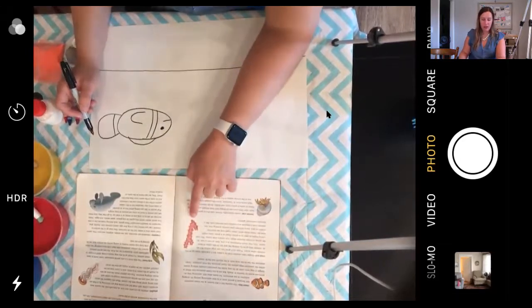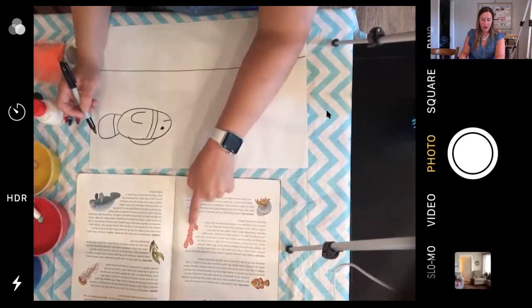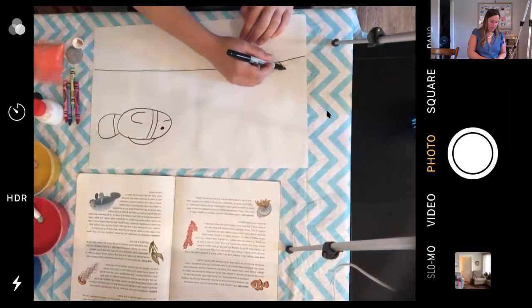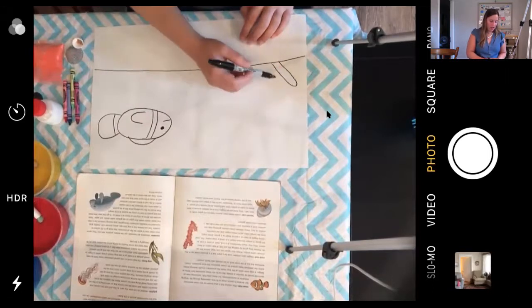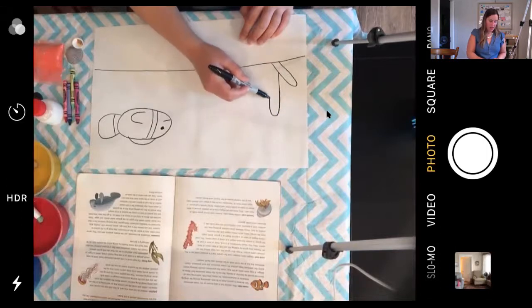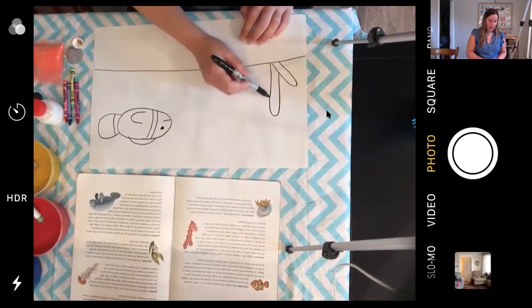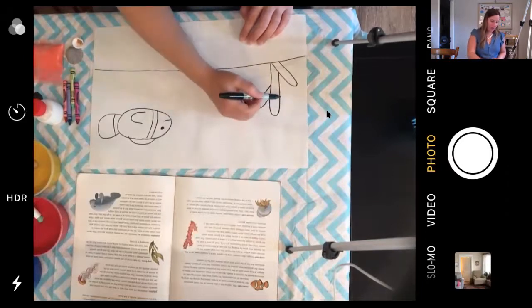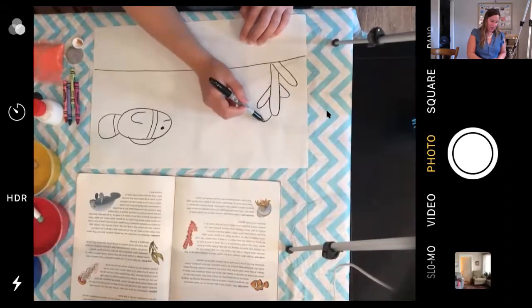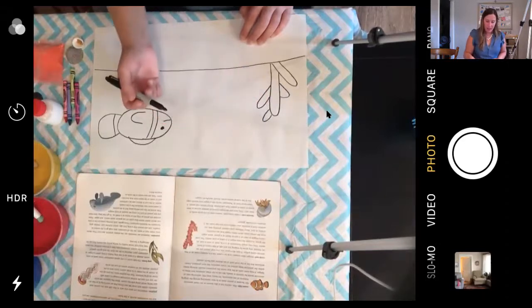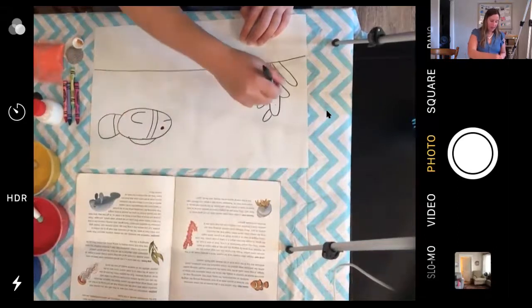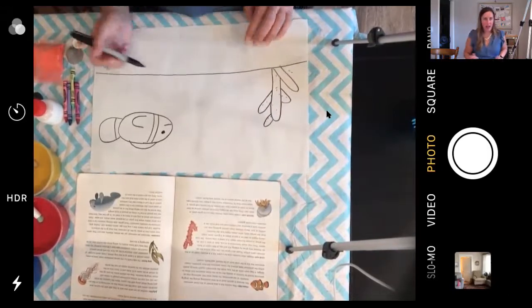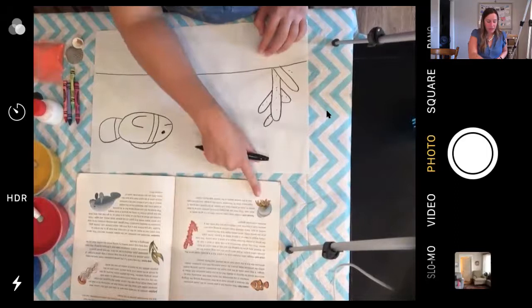I'm going to add some coral into my picture. Coral is like a bunch of big lines, so I'm just going to draw a line going this way. I'm going to add a line over here, a line over here, and it looks a little bumpy, so I'm going to add some bumps. And then who lives on the bottom of the ocean? The hermit crab.